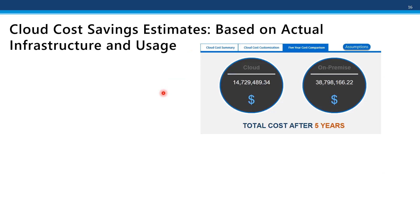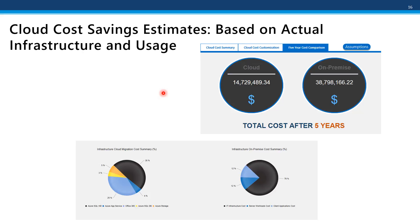Now we're going to show you actual customer-based data from the actual infrastructure and usage. Based on the Cloud Recon analysis, over a five-year period this particular customer would spend over $38 million in on-premise IT cost. If they were to follow our recommendations in terms of right-sizing, consolidation, and which applications should move to IaaS, PaaS, and SaaS, they would save a significant amount of money and their cost would be less than $15 million.